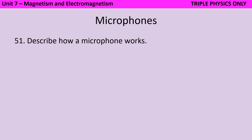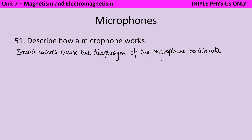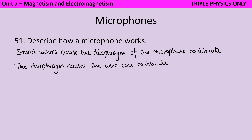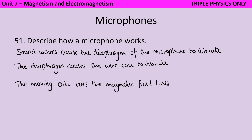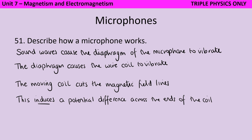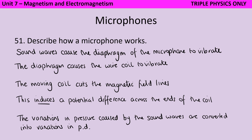Sound waves are caused by vibrations, and it's the frequency of those vibrations that determines the pitch of the sound. Those sound waves cause the diaphragm of the microphone to vibrate with the same frequency as the sound wave. That diaphragm in turn causes a wire coil inside the microphone to vibrate as well. The wire coil is made from a conductor, and that conductor is moving through the magnetic field lines. When we have a conductor moving through magnetic field lines, that's going to induce a current and therefore a potential difference. So this induces a potential difference across the ends of the coil, and the variations in pressure caused by the sound waves are converted into variations in potential difference.